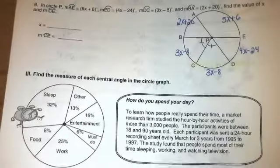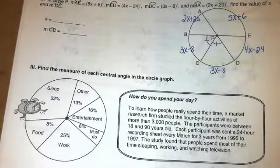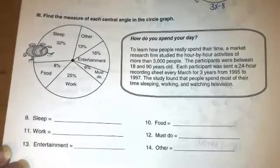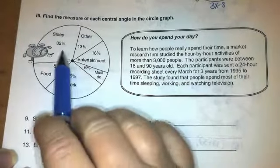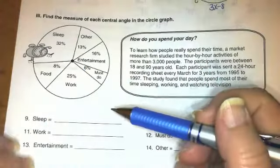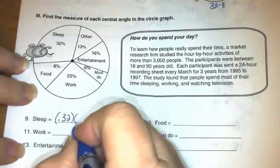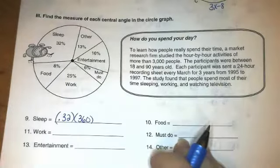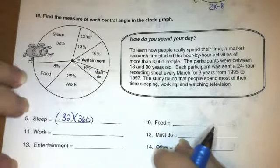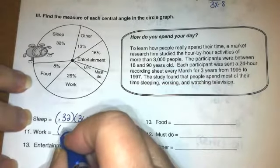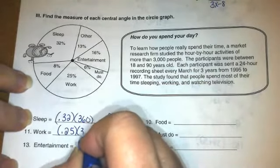So get you started on that one. This last one is a circle graph. So they want us to find the measure of each central angle. So what they've done is they've given us percentages. Since we know that a circle is 360 degrees, for sleep I'm just going to take 32 percent of 360 and get my degrees for that one. So that one's 96 degrees. For work, I'm going to take 25 percent times 360.